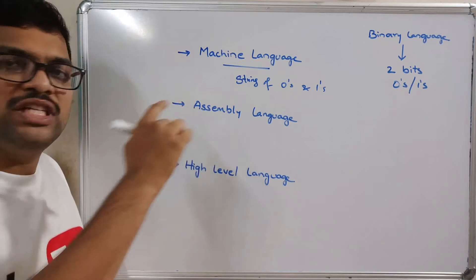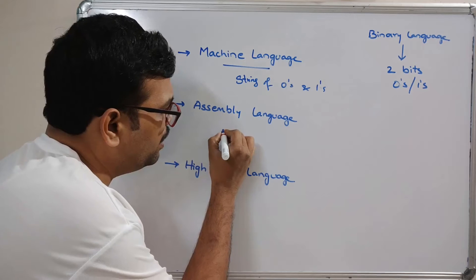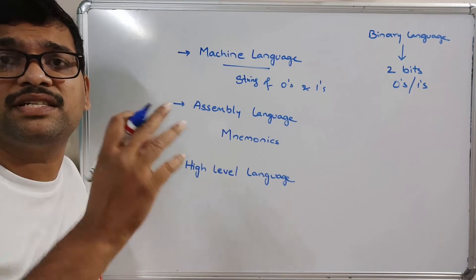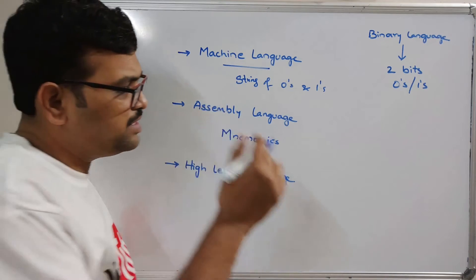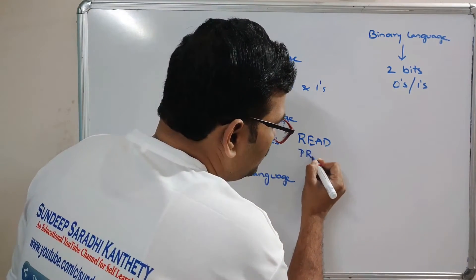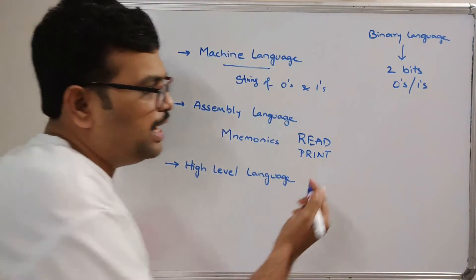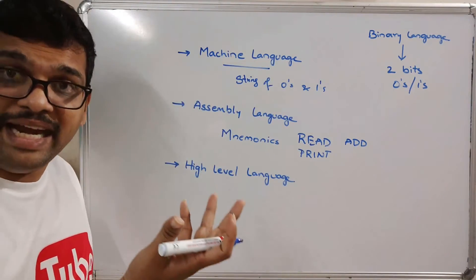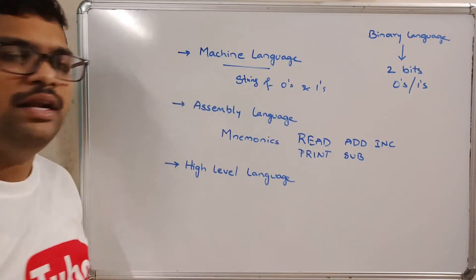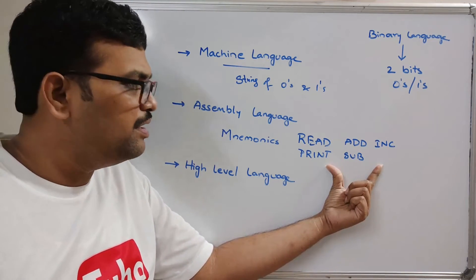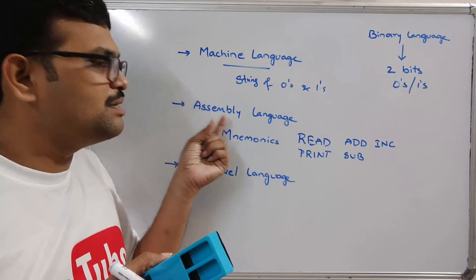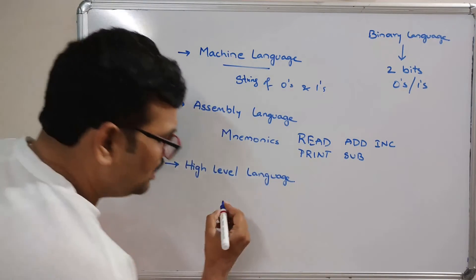Now, what about assembly language? In assembly language there will be mnemonics. Mnemonics means a few English words are given to represent certain zeros and ones. For example, there will be an instruction called 'read' to take input, and 'print' as the mnemonic to print the output. Similarly, there is a mnemonic 'add' to perform addition, 'subtract' for subtraction, and 'increment' for incrementing. These are called mnemonics, and instructions can be given with the help of these mnemonics in assembly language.